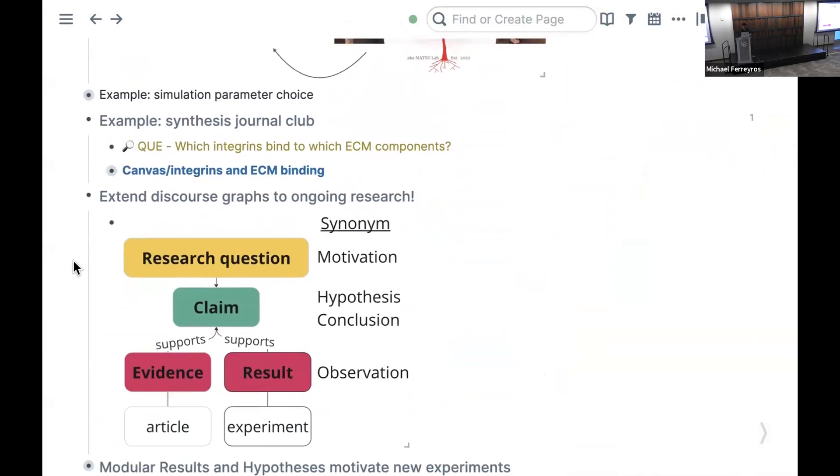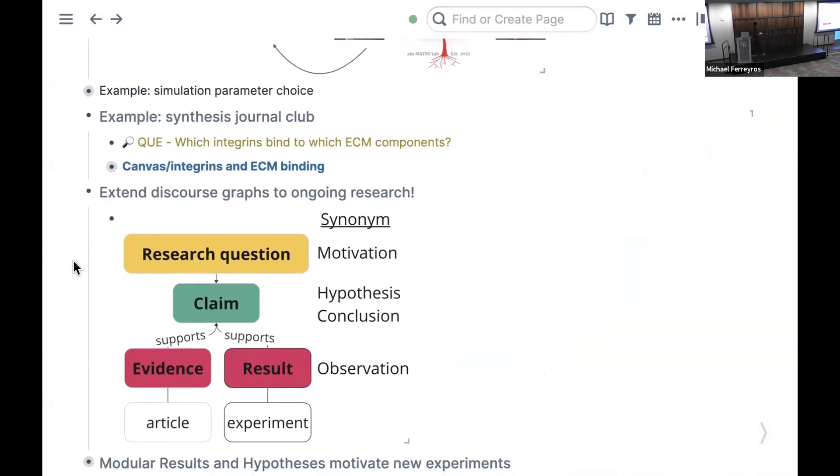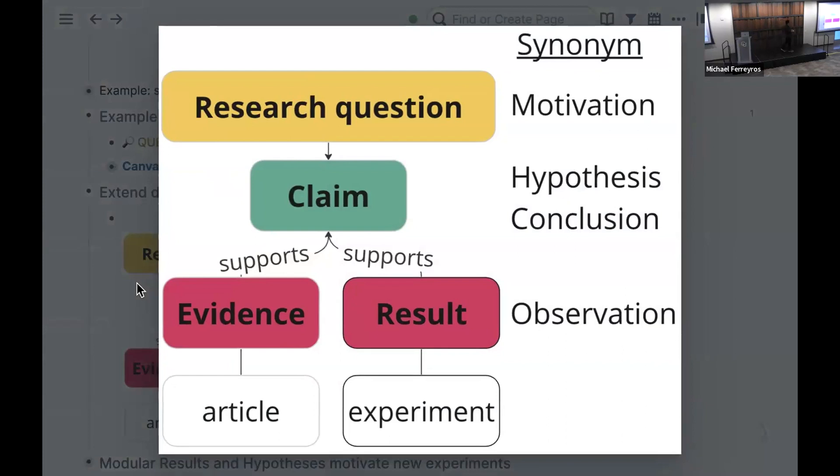That's when this project got really exciting. I started to realize that discourse graphs aren't just going to help our literature synthesis, but our ongoing research. I've reformulated the discourse graph schema, but on the right I renamed the evidence to a result. This is an original result from our lab's work founded in an experiment or simulation. I realized, what am I doing every day except collecting new pieces of evidence trying to inform a new claim I'm going to publish? This should be the substrate and operating system for our distributed collaboration. And now it is within our lab. It's just fantastic.